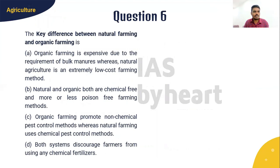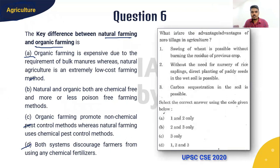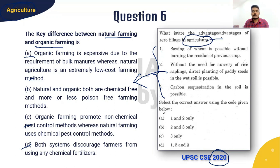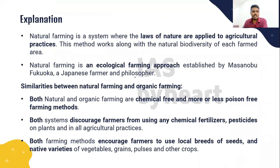Question 6 is from the agriculture topic: What is the key difference between natural farming and organic farming? There are four options. This question has been inspired from the 2020 question paper. In recent years, UPSC has asked more questions from agriculture topics due to increasing production costs, increasing farmer debt, and farmer suicides happening in India. I will give you 10 seconds to solve this question.